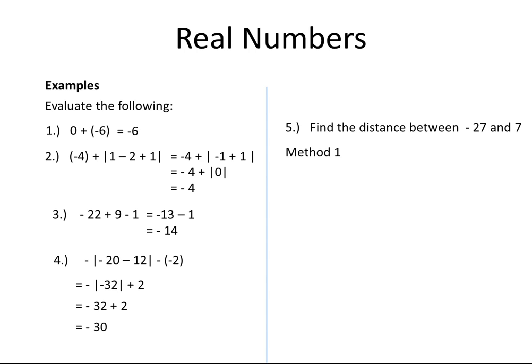In the first method, I am going to take the first number minus the second number. So I take the first number, which is minus 27, and subtract the second number, which is 7, and place this in the absolute notation. Minus 27 minus 7 is equal to minus 34. The absolute value of minus 34 is 34.